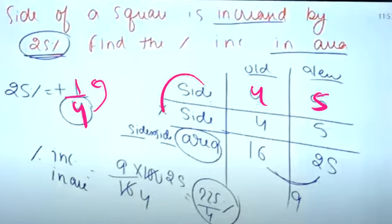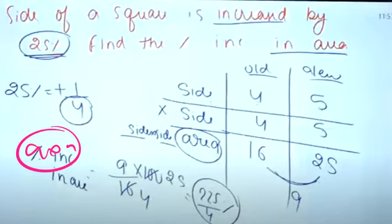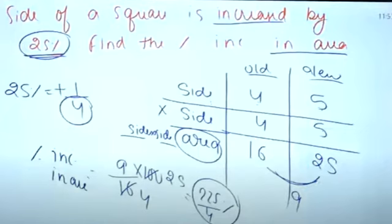Area is side squared. Old area is 4² = 16, new area is 5² = 25. The increase in area is 25 - 16 = 9. So the percentage increase in area is (9/16) × 100.